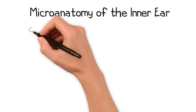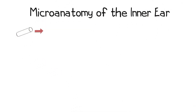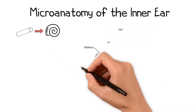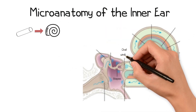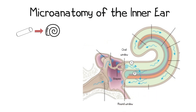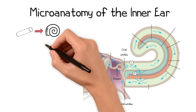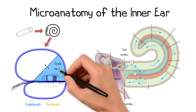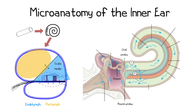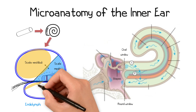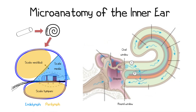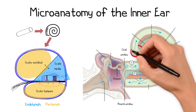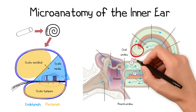The membranous labyrinth can be considered a single tube that has been curled into a spiral. The oval window allows sound energy to enter the inner ear, and the round window enables the same energy to escape. When viewed from a cross-section, we can appreciate the three fluid-filled chambers that comprise the membranous labyrinth. These are the endolymph-filled scala media, which contains the sound transducers, along with the perilymph-containing scala vestibuli and scala tympani. These two perilymph-containing chambers are in fact continuous and merge at the apex of the cochlea, called the helicotrema.